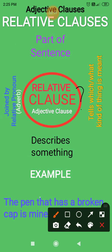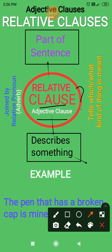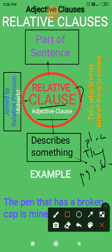What is a relative clause or an adjective clause? A relative clause is a part of a sentence — it's a clause that describes something. It can describe a place, a thing, a person, or something else. This part of a sentence is introduced or joined by relative pronouns or relative adverbs.